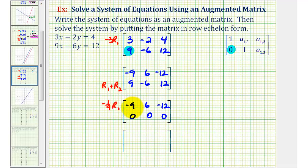Notice that -1/9 times -9 is positive 1. -1/9 times 6 would be -6/9, or -2/3. And -1/9 times -12 would be positive 12/9, or positive 4/3. And again, the second row is all zeros.